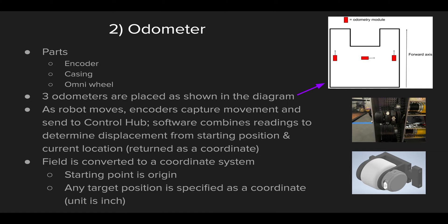The position we are currently at is returned as an ordered pair used on a rectangular coordinate system. The entire field, when using odometers, is converted into a rectangular coordinate system. Your starting point on the field is your origin with coordinates (0, 0), and any target position is specified by another coordinate. For example, if I wanted to move 3 inches to the right and 5 inches forward, I would move to the position (3, 5). All units are in inches.